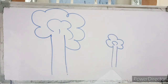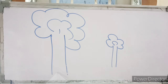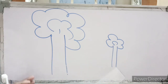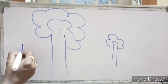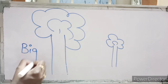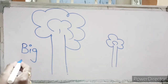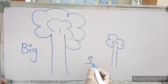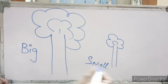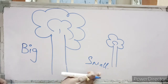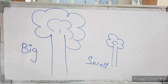Understood? Which is bigger — the first one or the second one? The first one is bigger, and this one is smaller. So you understand what is bigger and what is smaller. This is the big tree and this is the small tree.